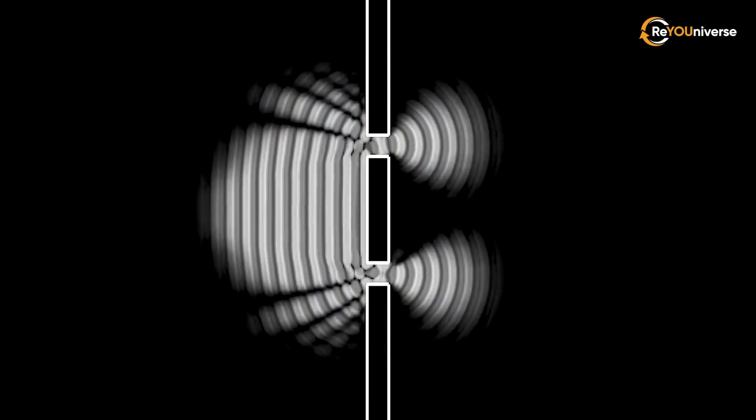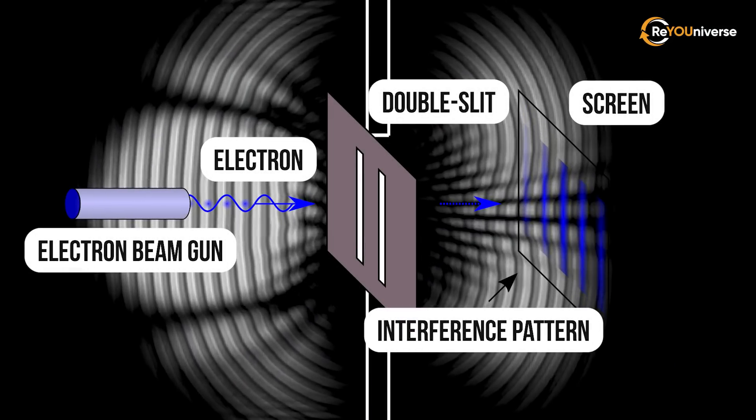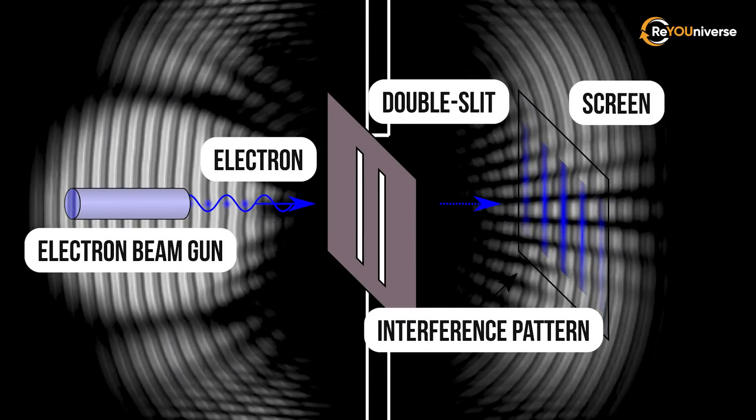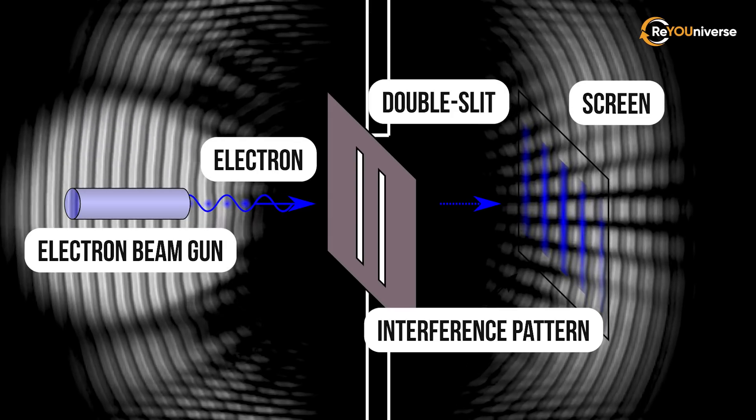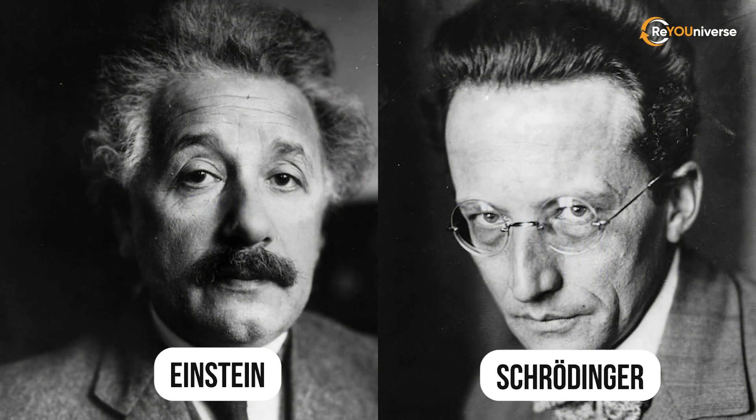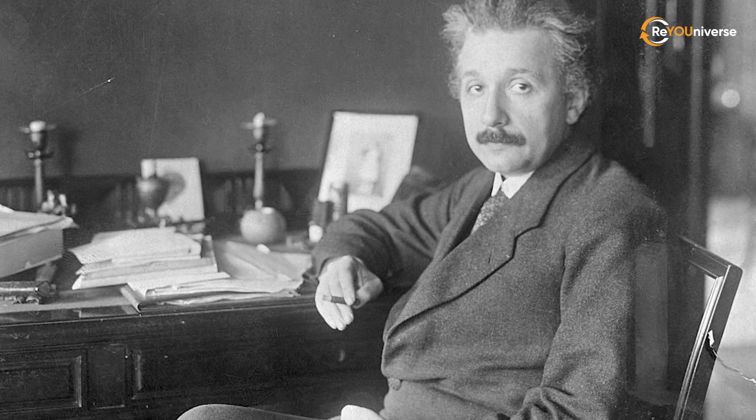The first theory is the Copenhagen interpretation, an idea put forward by Heisenberg and Bohr. In a nutshell, the theory proposes that an unobserved particle flies through one of the two slits as a group of equally probable particles in different positions and interferes with itself. Einstein and Schrödinger didn't like this interpretation.